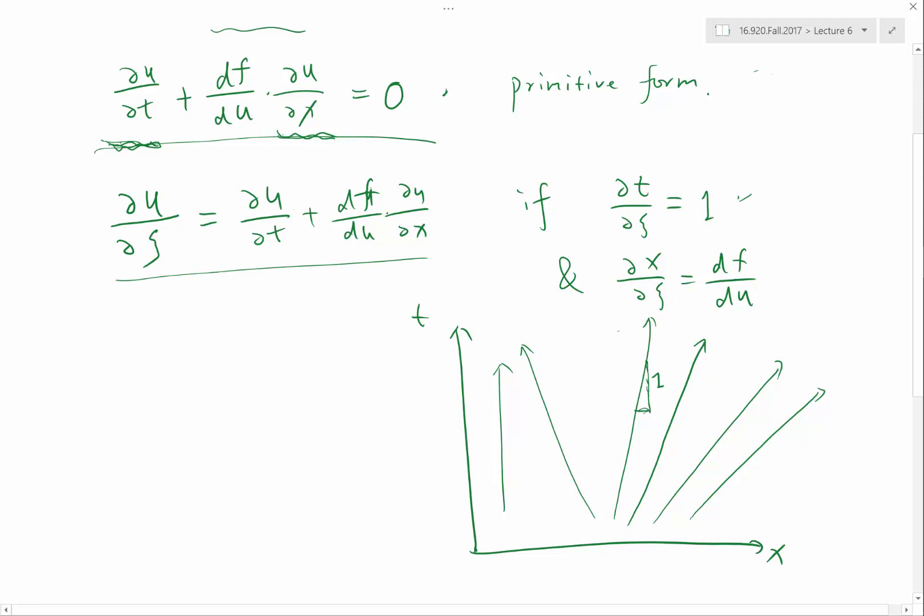The horizontal axis, which is dx/dc, that is df/du. Or the slope is the inverse, is the reciprocal of df/du. So this would be the c directions.